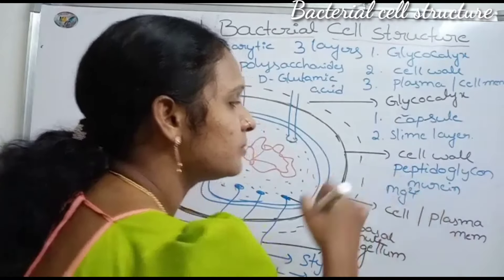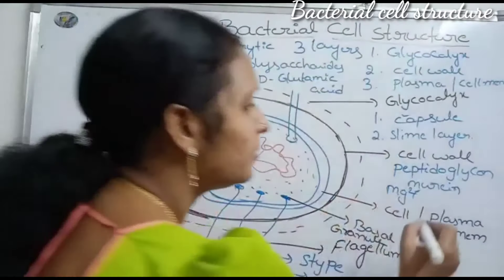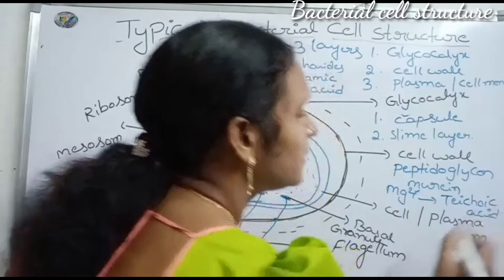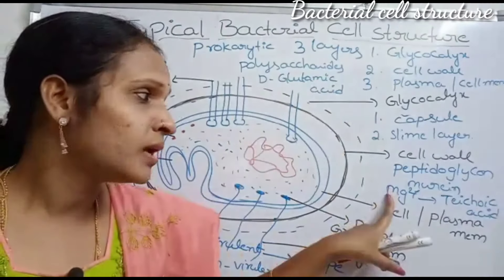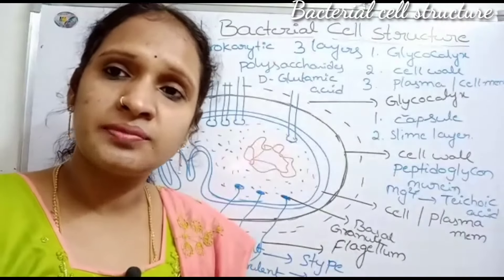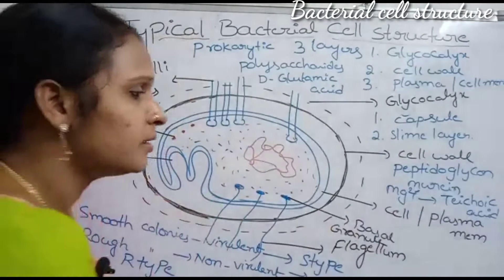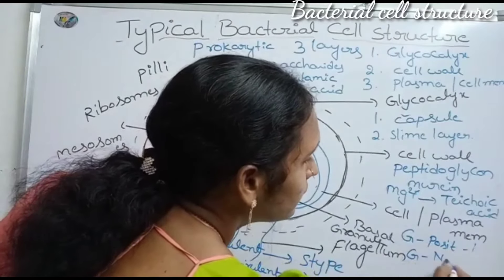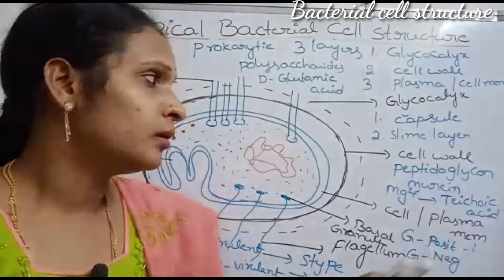The bacterial cell wall component includes magnesium (Mg²⁺), which combines with teichoic acid. Based on the presence or absence of teichoic acid, bacterial cells are classified into two types: gram-positive bacteria and gram-negative bacteria. This gram staining technique is discussed in another video.